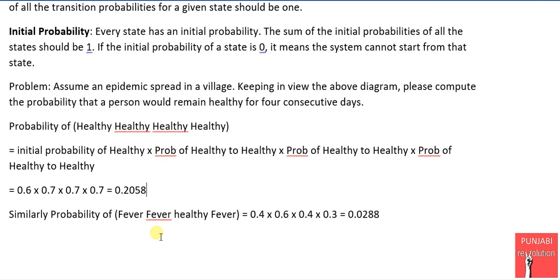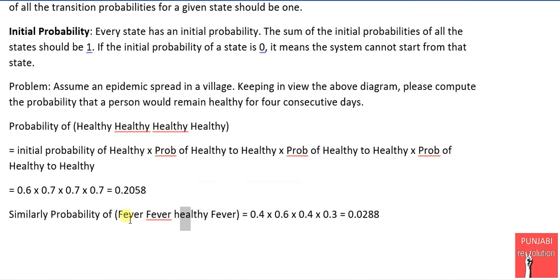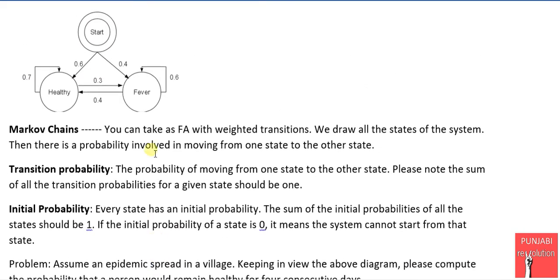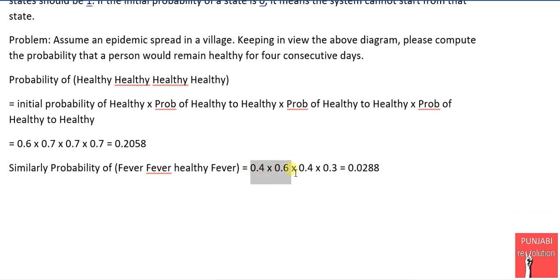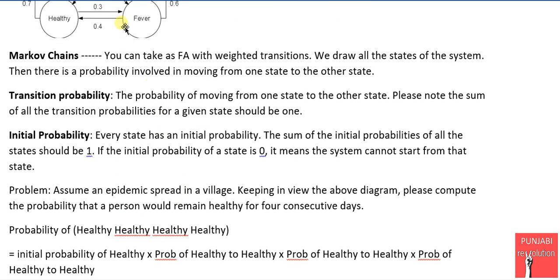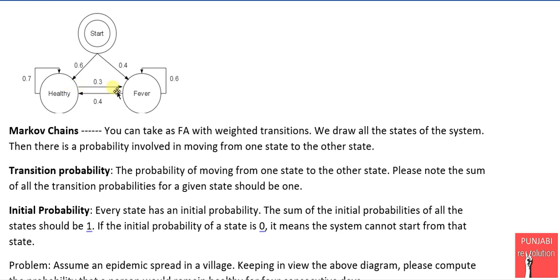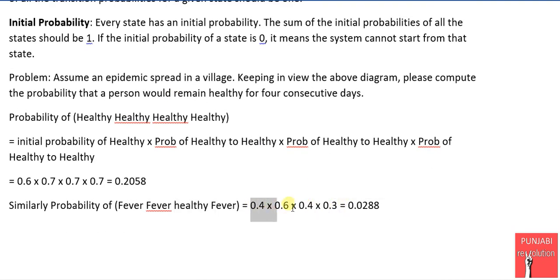Let's solve another problem: finding the probability that a person had fever on the first day, fever again on the second day, became healthy on the third day, and had fever again on the fourth day. We use the initial probability for fever, which is 0.4, then fever-to-fever at 0.6, then fever-to-healthy at 0.4, and finally healthy-to-fever at 0.3. The product of these four values — 0.4 × 0.6 × 0.4 × 0.3 — equals 0.0288.